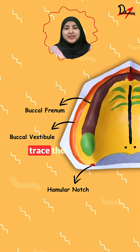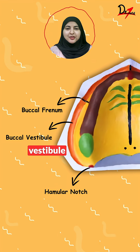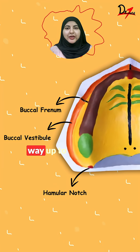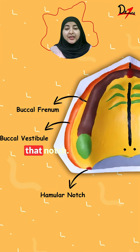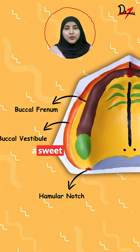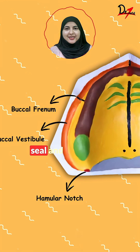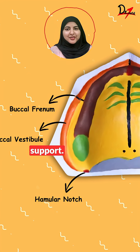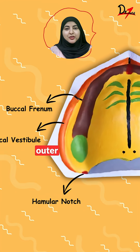On the sides, we trace the buccal frenum and the buccal vestibule all the way up to the hamular notch. That notch is a sweet spot for posterior seal and support. These landmarks form the outer boundary.